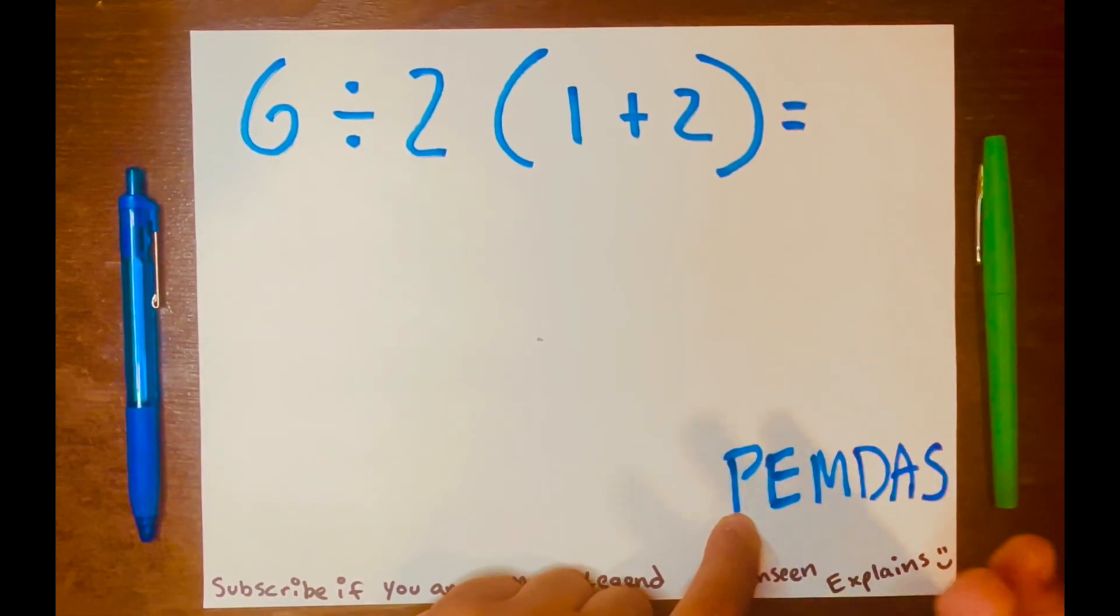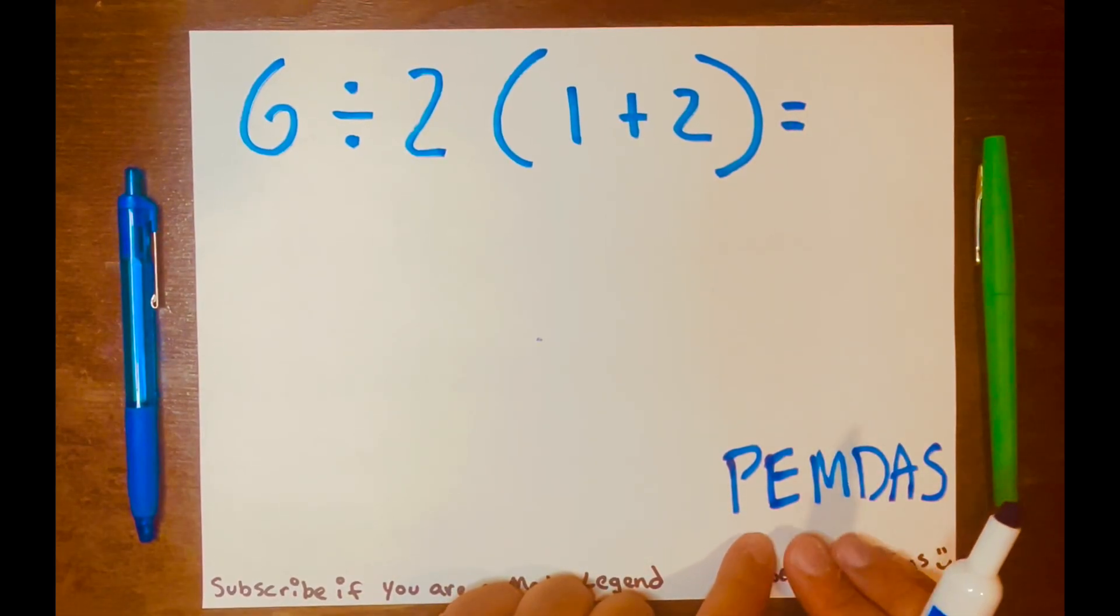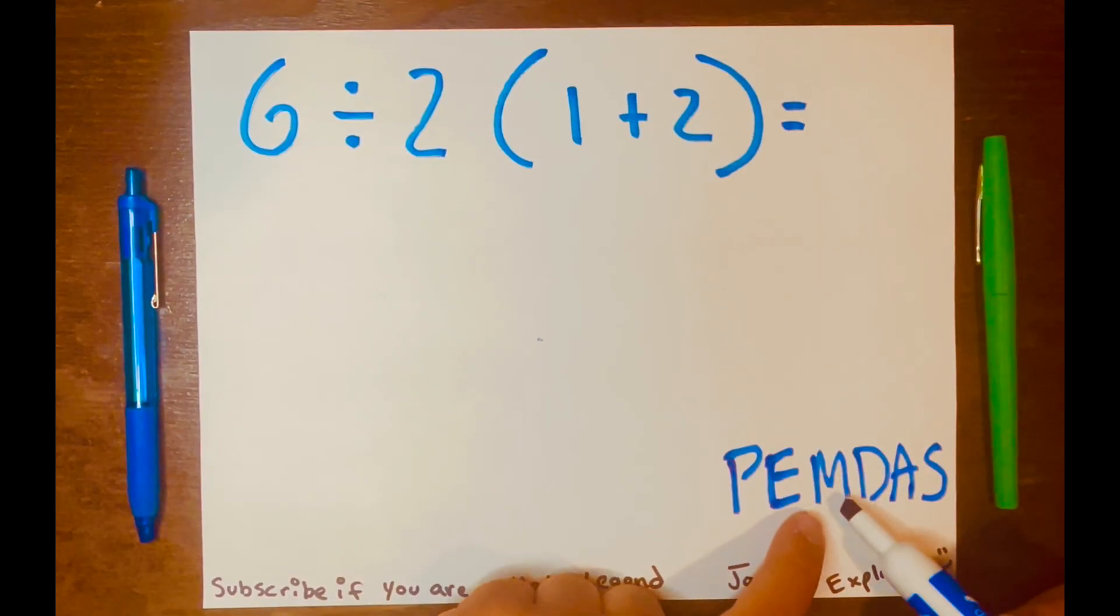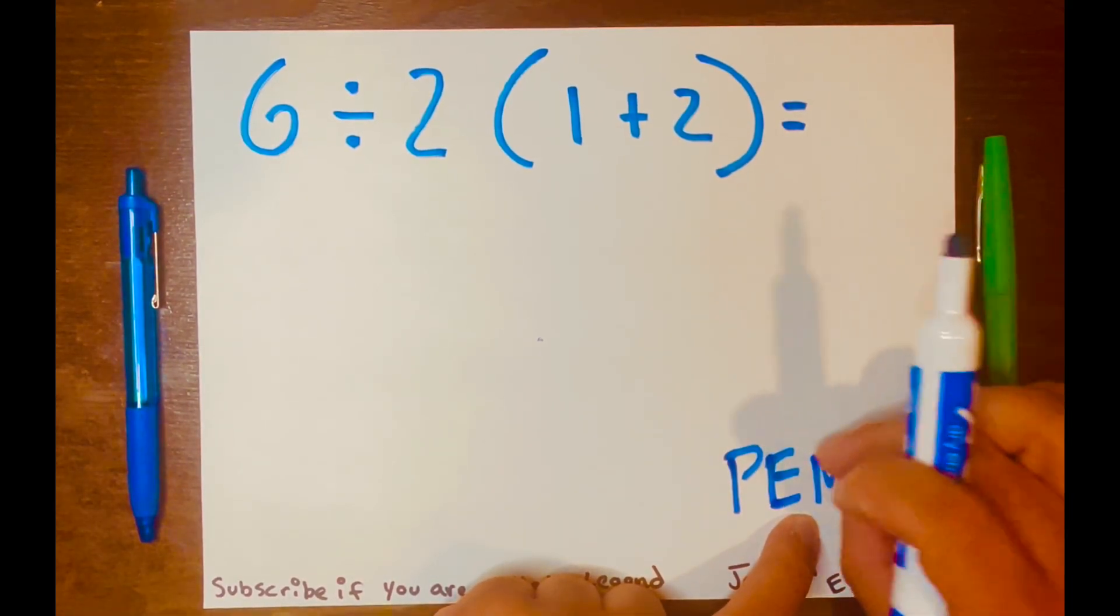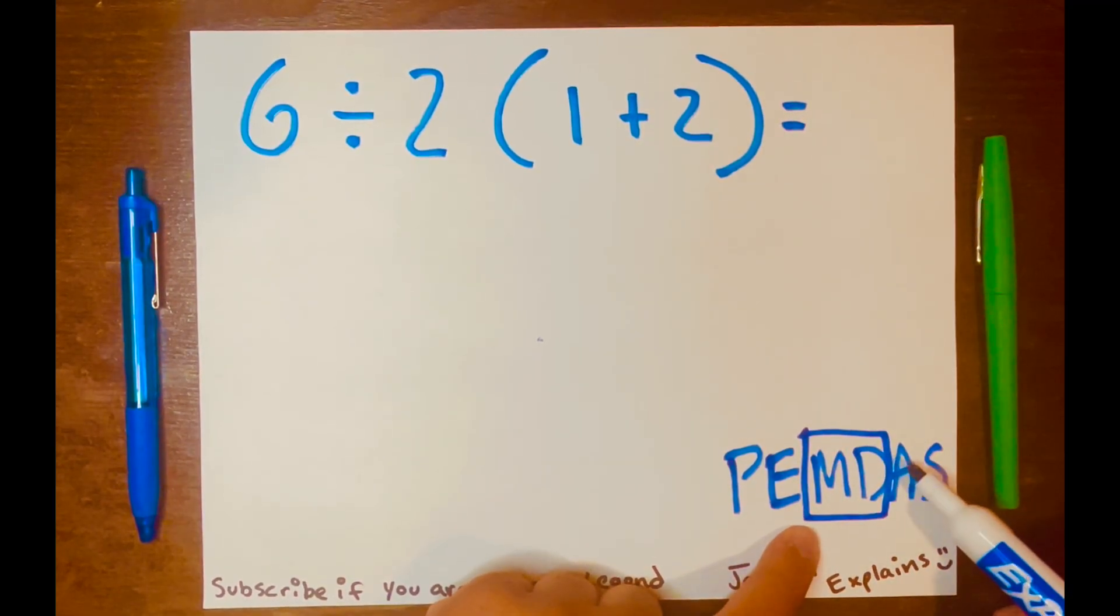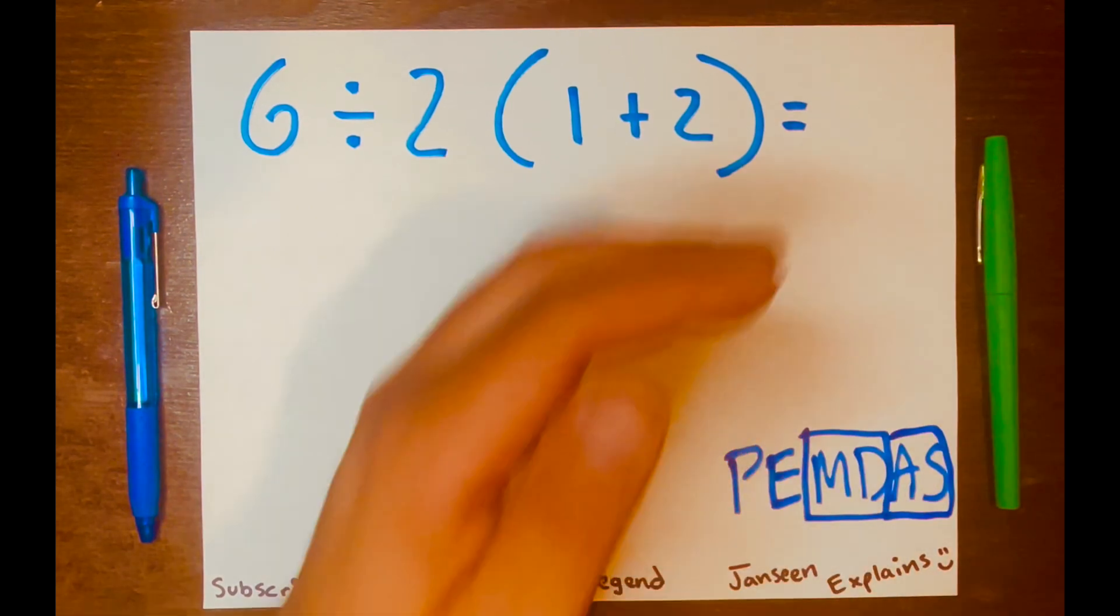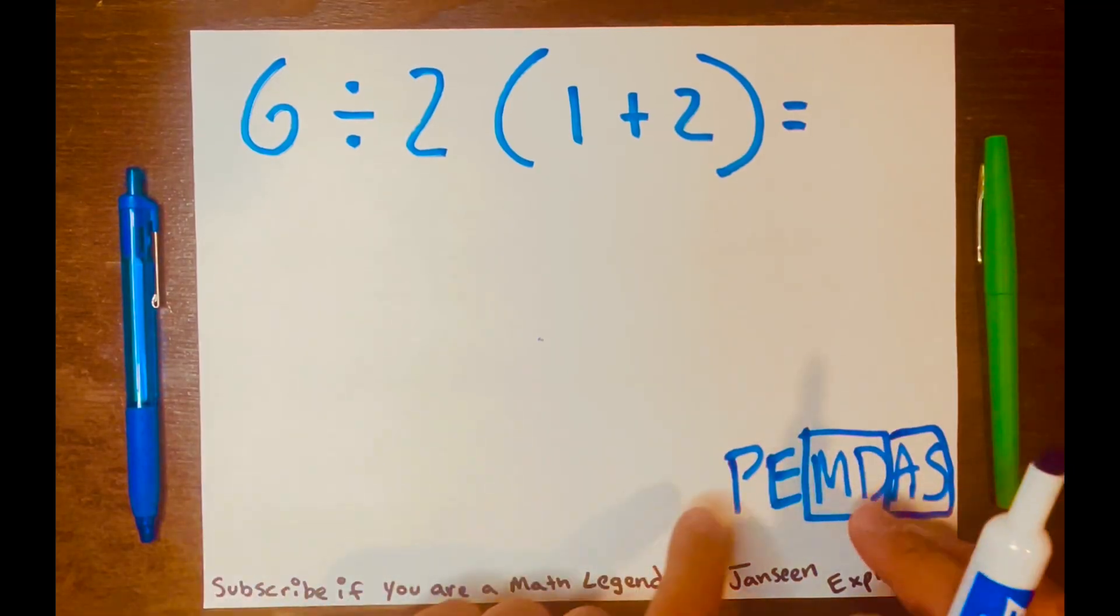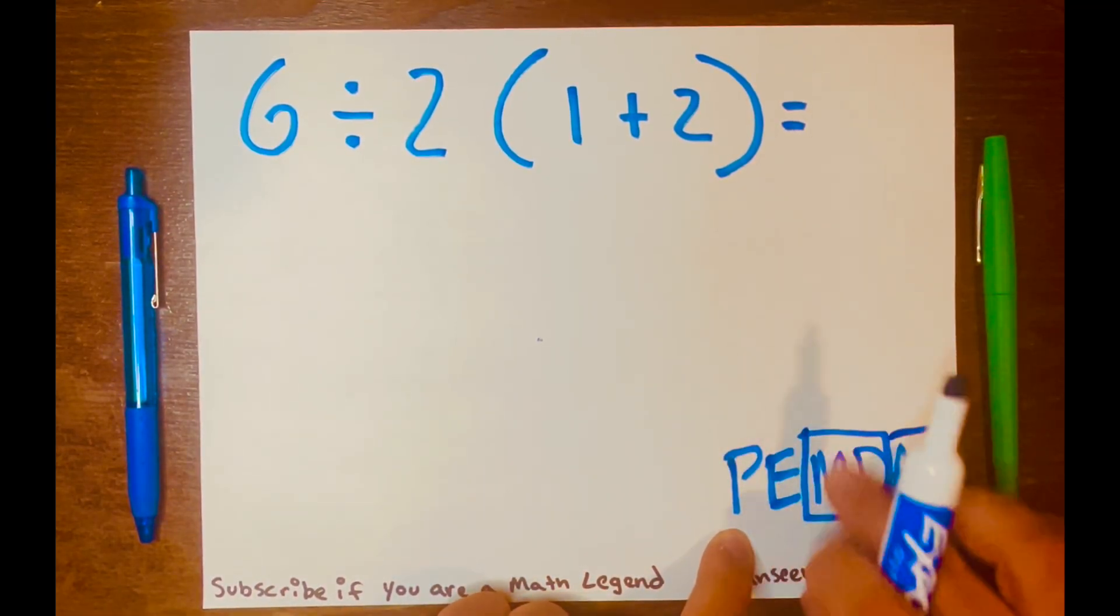So, one of the biggest mistakes some people make when using PEMDAS is not realizing that it is split into four different levels. So, you have P, that's one level, E, that's another level, MD, it's a level, like this, within its level, and then AS is another level. So, AS is within a level. So, that's the biggest mistake people don't see when using PEMDAS.